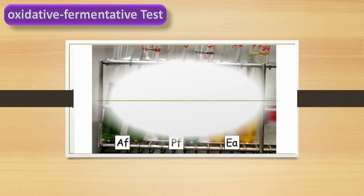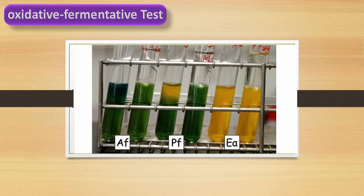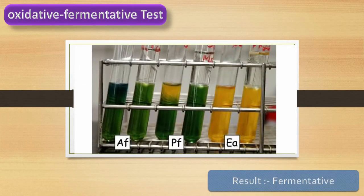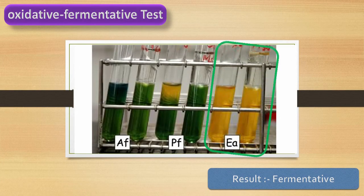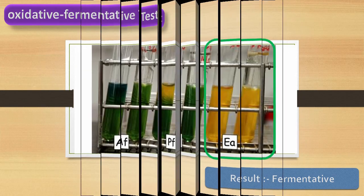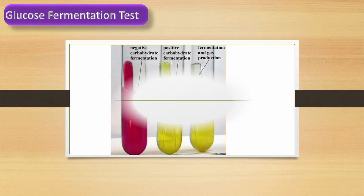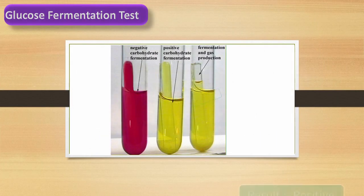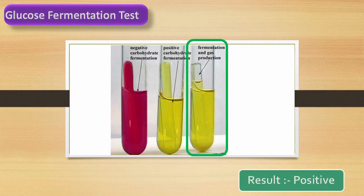Oxidative-Fermentative test: we can see yellow color production in both tubes, so the bacteria shows fermentative metabolism. Glucose fermentation test result is positive.